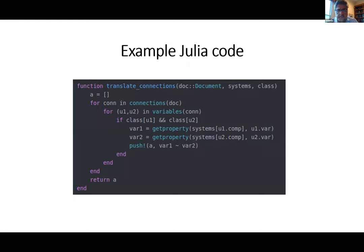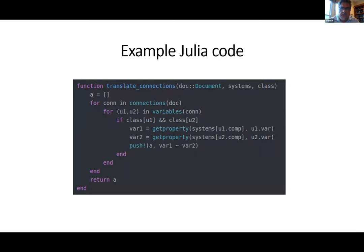Here's a code example from the CellML toolkit in Julia. At first glance it looks like any other programming language. The only thing that might look slightly unusual is the tilde sign, which is part of the ModelingToolkit, not standard Julia. Basically, here we're defining the relationships between variables of different components in CellML and building the ModelingToolkit model from what we read from the CellML file.